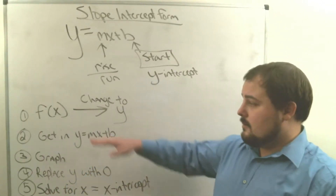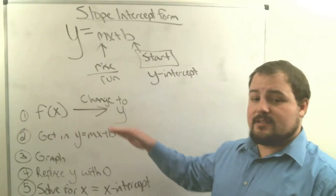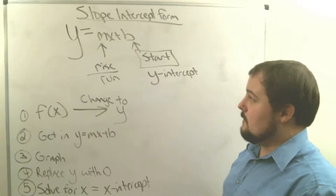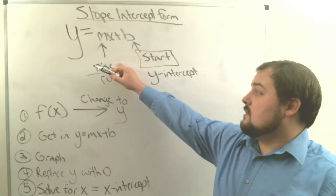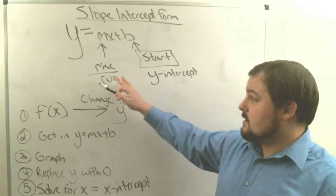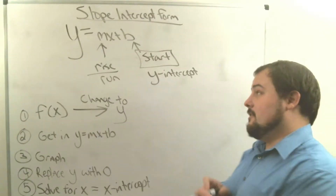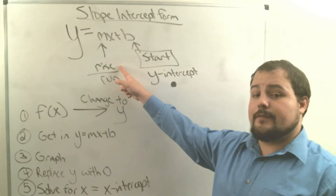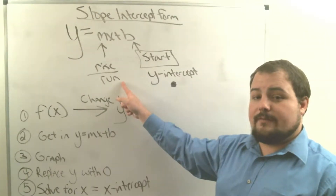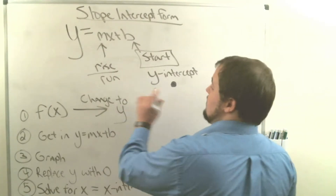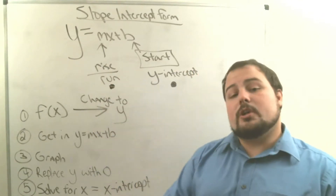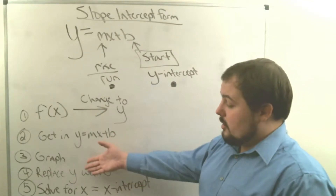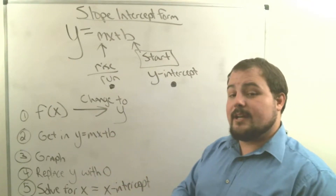So we have five steps. Part one: change f of x to y to get y equals mx plus b. Part two: graph by using rise and run, but first put a dot at the y-intercept. That's your starting point. Then use the rise to go up or down, and the run to go right or left, and place another point. Once you have two or three points, connect them to make your line.